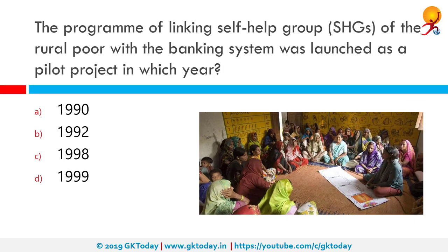The program of linking self-help groups of the rural poor with the banking system was launched as a pilot project in which year? The correct answer is 1992. A self-help group is a financial intermediary committee usually composed of 10 to 20 local women or men. Most self-help groups are located in India, though some can be found in other countries, especially in South Asia and Southeast Asia.